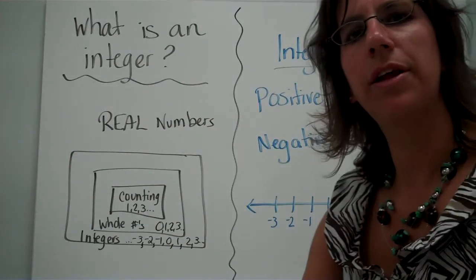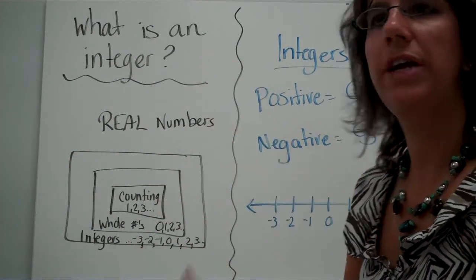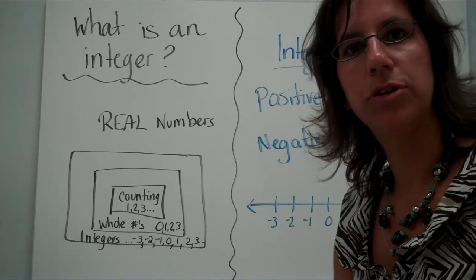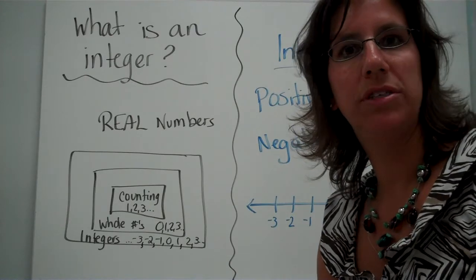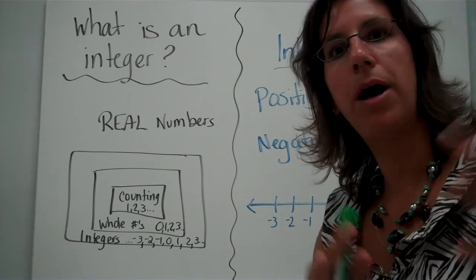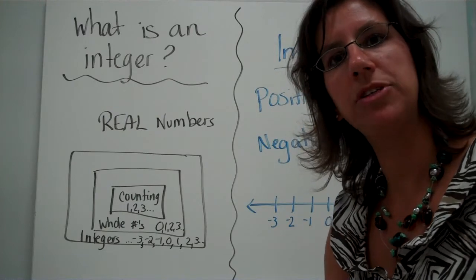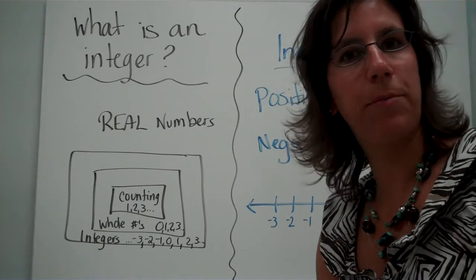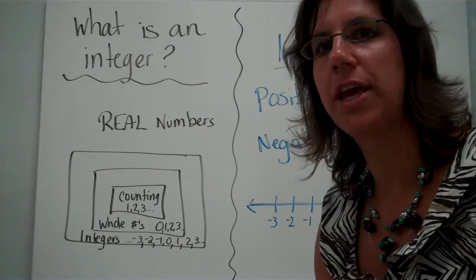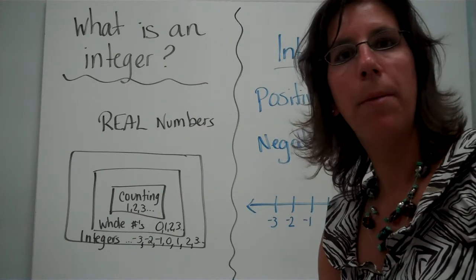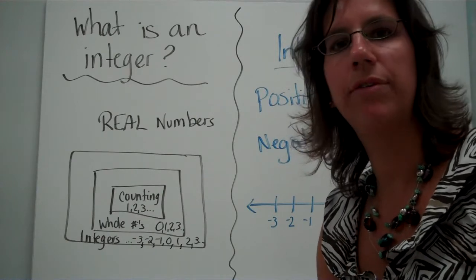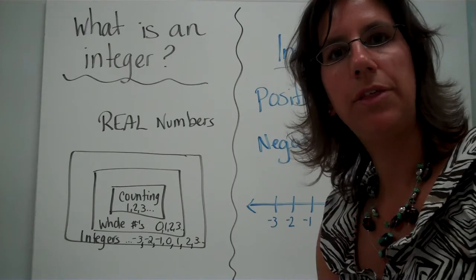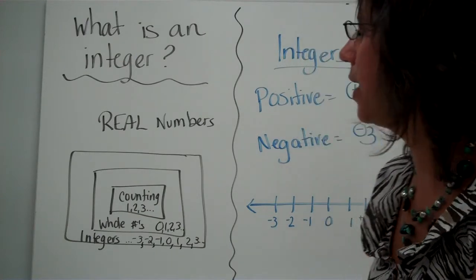To get started, you really need to know what an integer is. There are different categories of numbers, just like there are different categories of jobs. For example, public servants — you can be part of the Parks and Recreation Department, the Education Department, the Police Department, Fire and Rescue, and EMS. Those are all subsets, all part of government workers.